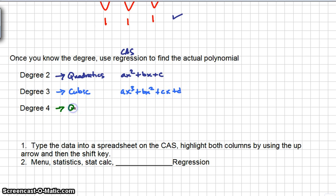And finally, degree 4 is called a quartic, not to be confused with quadratic. A quartic will look like ax to the fourth plus bx cubed plus cx squared plus dx plus e. So when you're doing regression on your CAS, it will give you a, b, c, d, and e values. Keep in mind that there are degrees 5 and 6 and so on, but typically 2, 3, and 4 are the ones that you'll be responsible for in this class.